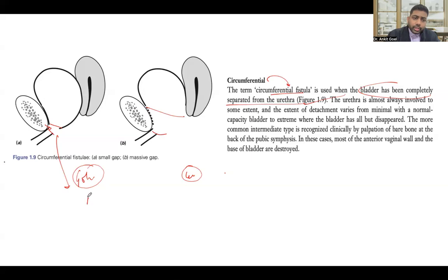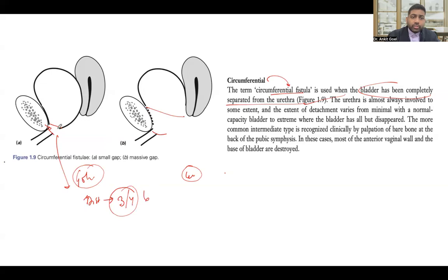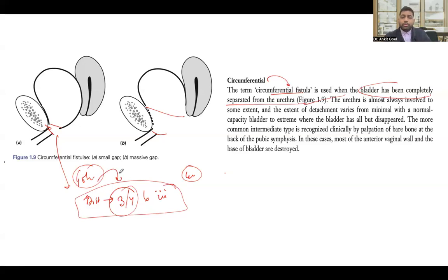If we apply the GOES classification to a circumferential fistula as an example: the first component — distance — would fall under category 3 or 4 if the urethral length is reduced. The second component — size — for example, 2 cm, would come under type B. The third component — the circumferential defect — places it in spatial category 3. This GOES classification gives you more practical detail about the fistula.